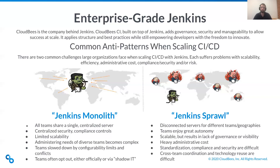CloudBees CI allows you to adopt best practices from each of these open source anti-patterns. It allows you to have one single pane of glass for governance and standardization — which you get with the monolith — while also running Jenkins at scale like Jenkins sprawl, which is critically important as well.